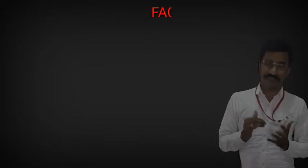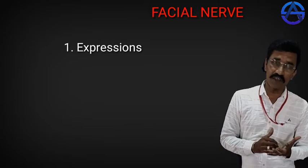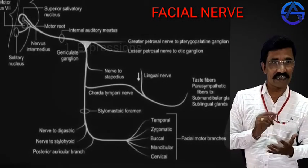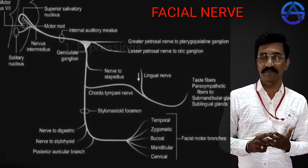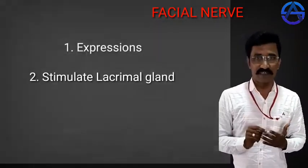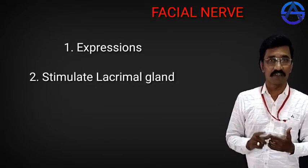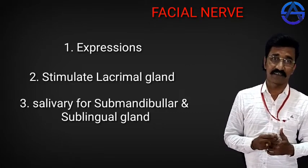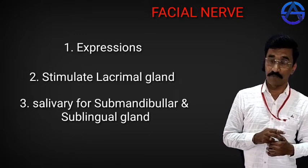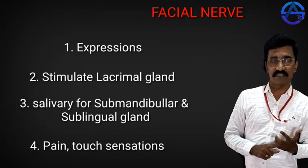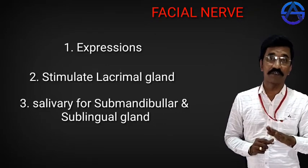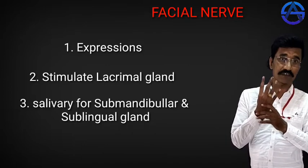What we are doing — the expressions of our face, all these expressions, whether laughing or crying, angry expressions — all these expressions are due to the facial nerve. Second, the facial nerve works to stimulate the lacrimal gland. Third, the facial nerve is the nerve for two salivary glands: submandibular and sublingual. Fourth, pain, touch, and temperature sensations are also conducted by the facial nerve. So there are four functions of the facial nerve.